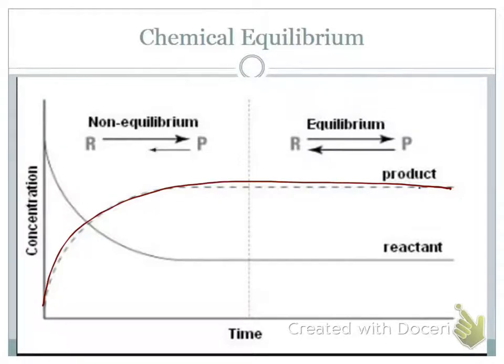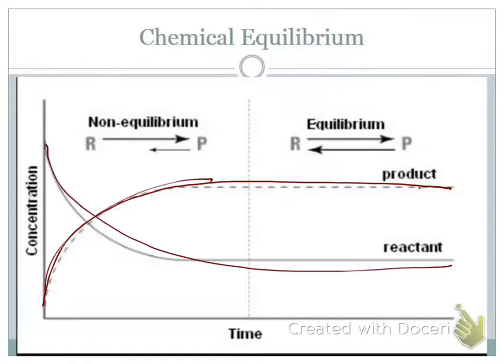So as the reaction proceeds, the concentration going from reactants to products is increasing. Products going to reactants is decreasing. But about right here, they're happening at the same rate.